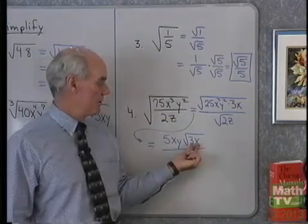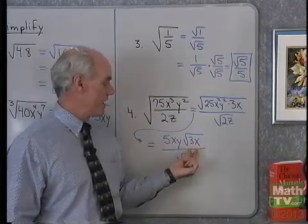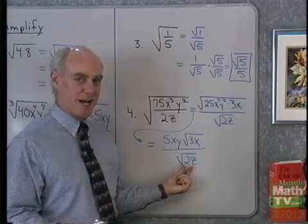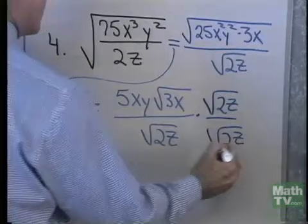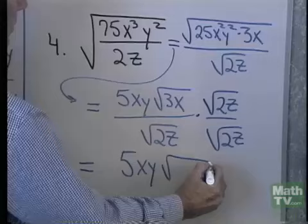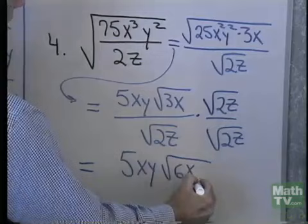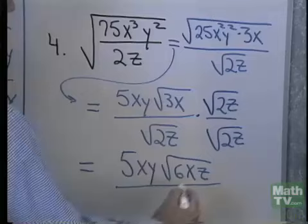Now I want to check if this is in simplified form. There are no perfect squares that divide 3x or 2z, so I've gotten everything I can out from under the radicals, and there are no fractions underneath each radical. But I do have a radical in the denominator, so I need to rationalize it by multiplying numerator and denominator by square root of 2z. In the numerator, square root of 3x times square root of 2z gives square root of 6xz, so I have 5xy times square root of 6xz. In the denominator, square root of 2z times square root of 2z gives simply 2z.